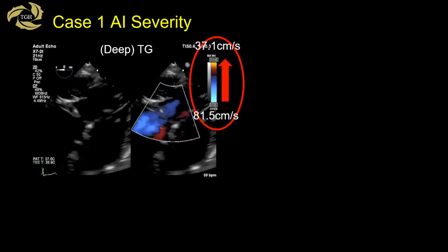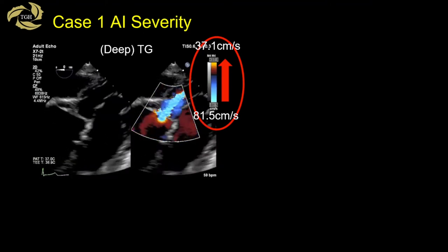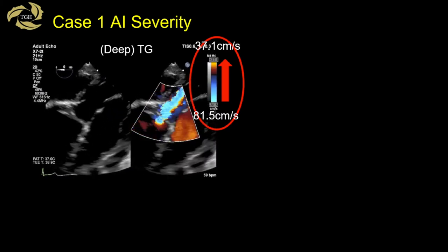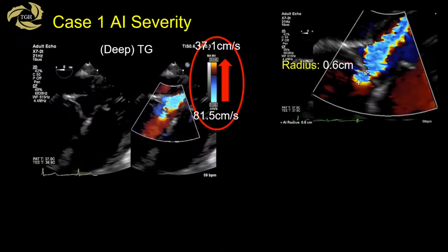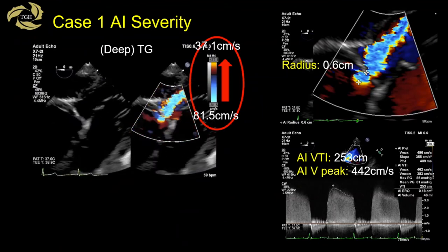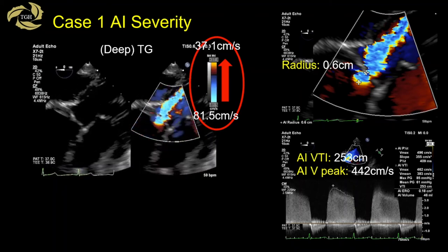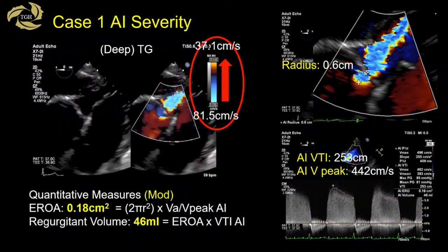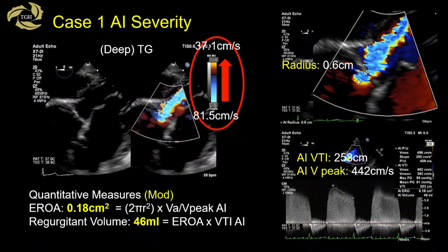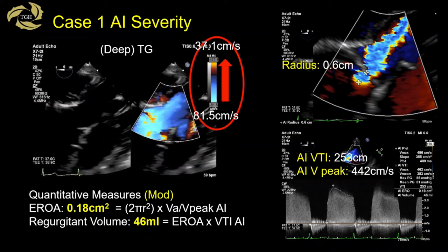A fairly simple additional method is EROA or PISA calculation, performed in the deep transgastric view. You shift the baseline upward to maximize the hemisphere at the flow acceleration zone, measure the radius — which is 0.6 cm in this patient — then trace the AI jet CW recording. Software within the machine will automatically calculate the result. In this patient, EROA was 0.18 cm² and regurgitant volume was 46 cc, suggesting moderate AI.